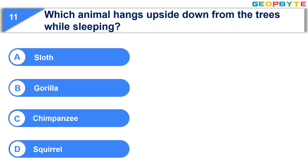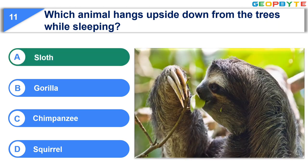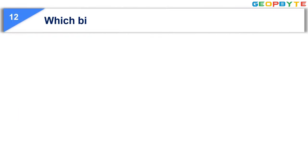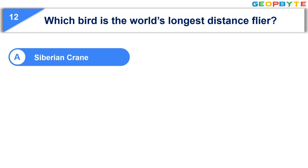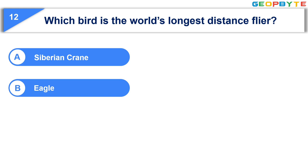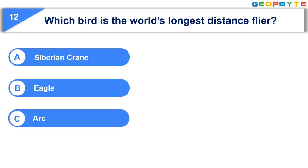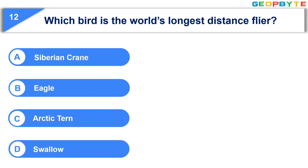Your time is up and the correct answer is Option A: Sloth. The twelfth question is: Which bird is the world's longest distance flyer? Option A: Siberian crane. Option B: Eagle. Option C: Arctic tern. Option D: Swallow.